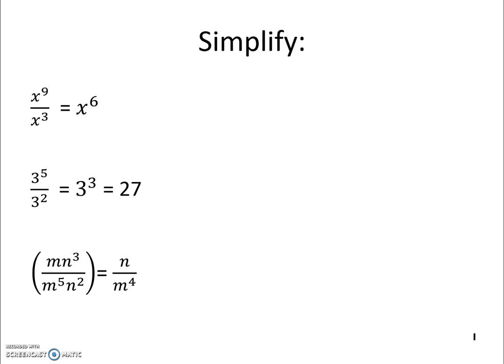mn cubed over m to the 5th n squared. If we have n cubed over n, we're just left with n on the top, on the numerator. If I have m over m to the 5th and I cancel that m into the m to the 5th, I'm left with m to the 4th. So our answer is n divided by m to the 4th.